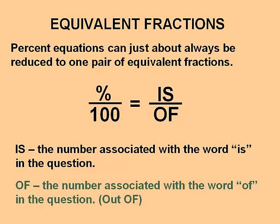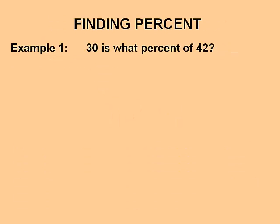'Of' is short for 'out of,' placing it in the denominator — just like percent is out of a hundred, so 100 is in the denominator. There are three things we can solve for in this fraction: we can solve for percent, we can solve for 'is,' or we can solve for 'of.' In the next examples we will do one of each.